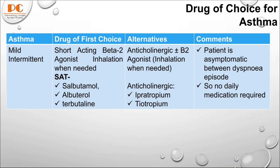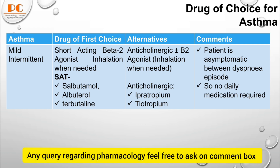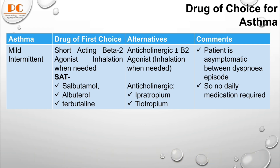First, we discuss asthma. For mild intermittent asthma, the first choice is an inhaled short-acting beta-2 agonist when needed. Examples include salbutamol, albuterol, and terbutaline. These short-acting beta-2 agonists are used for mild intermittent asthma.